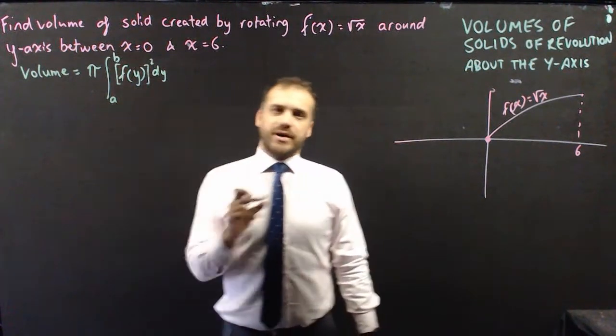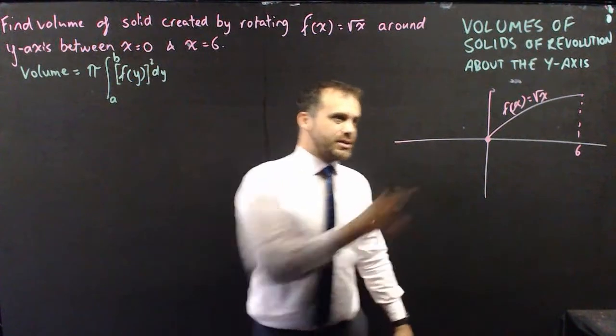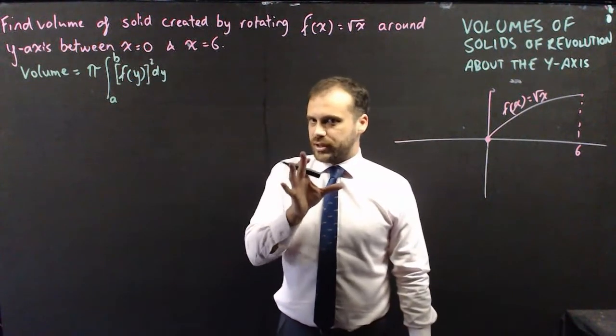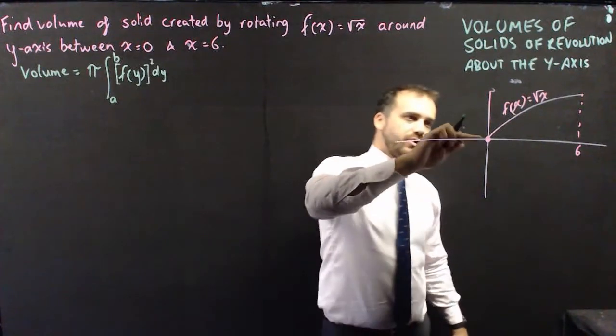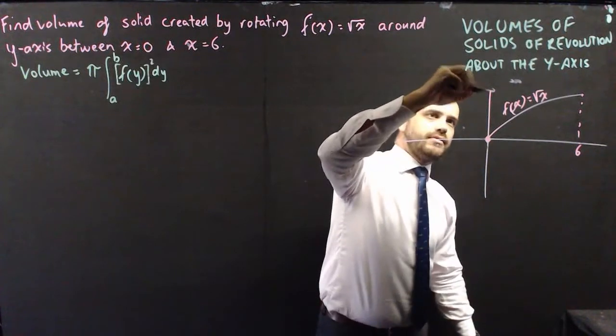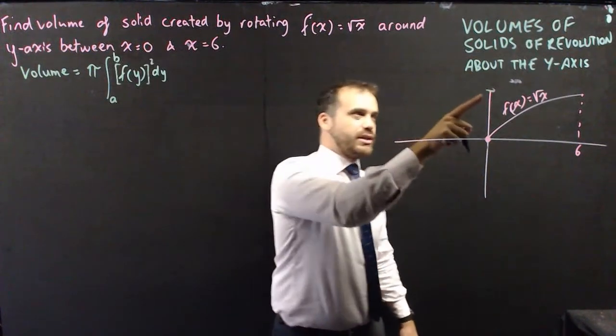Now, the a and the b values, you might think that's really easy. You'll say 0 and 6, but you're only half right there, right? Because the a and the b values are not this value and this value, it's this value and this value right here.